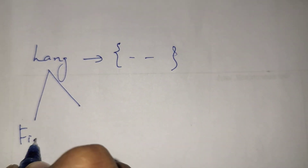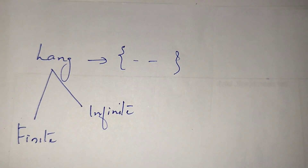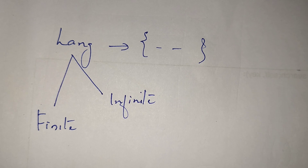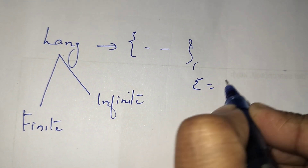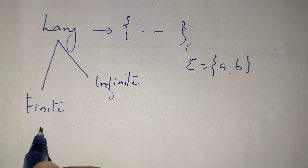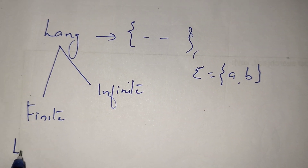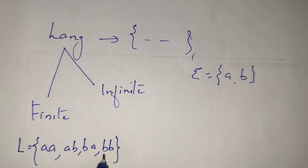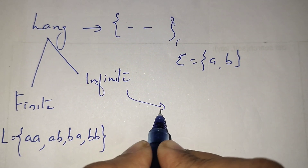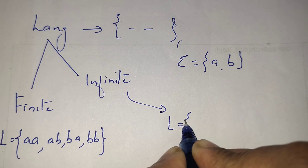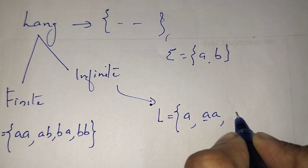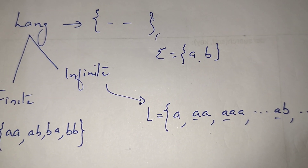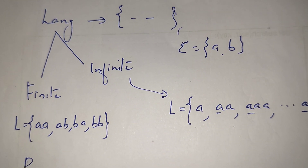A language may be a finite language or an infinite language. A finite language means the language consists of a finite number of strings. For example, using input symbols a and b, the set of all strings of length exactly two gives us: aa, ab, ba, bb — only four strings. That is a finite language. An infinite language means an infinite number of strings, for example the set of all strings starting with a: a, aa, aaa, ab, etc.